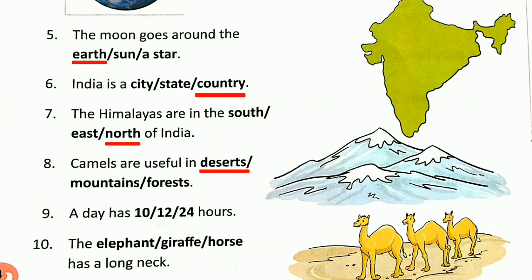Number 9: A day has how many hours? Yes — 24. A day has 24 hours. Very good. Number 10 and last: The elephant, giraffe or horse has a long neck? It's the giraffe. Giraffe has a long neck.